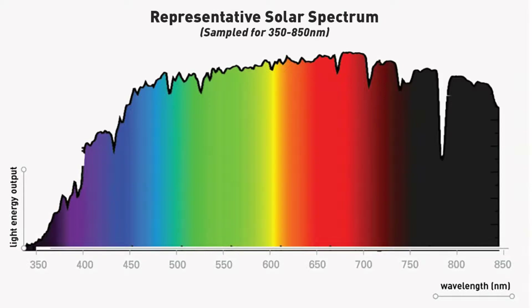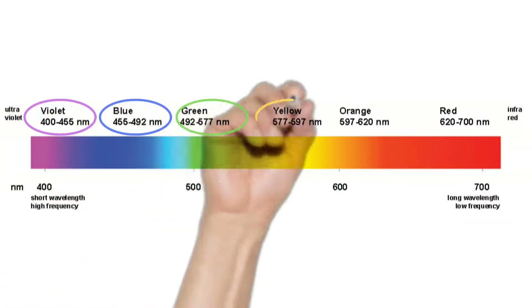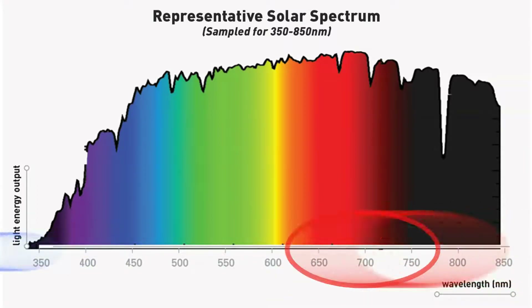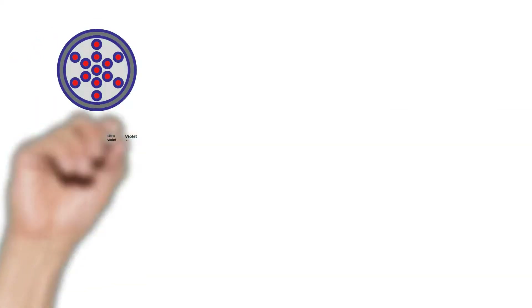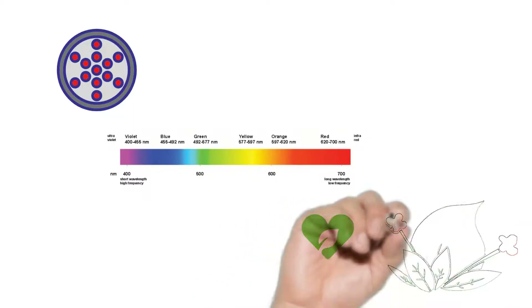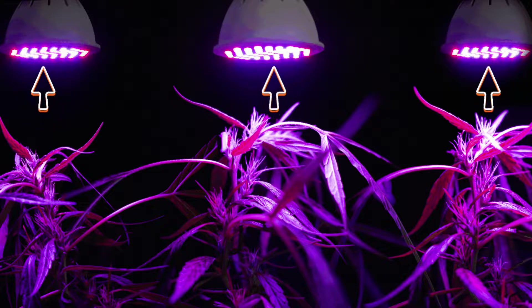PAR is in the range of 400 nanometers to 700 nanometers. All light colors can be identified with a specific wavelength. Plants do use light below 400nm and above 700nm, but in small quantities. To keep it simple, PAR is like food and the wavelength between 400nm to 700nm is their favorite food. Photosynthetic Photon Flux (PPF) is the amount of light being produced per second by the lighting system.